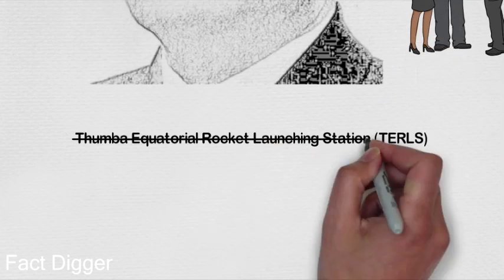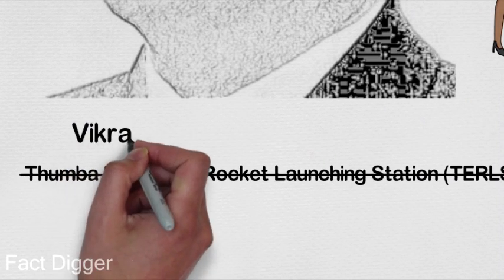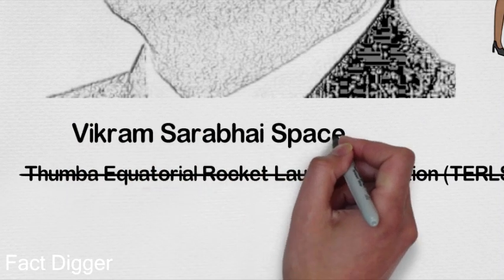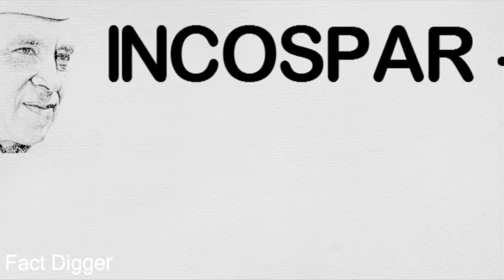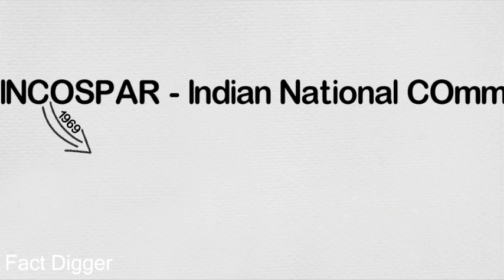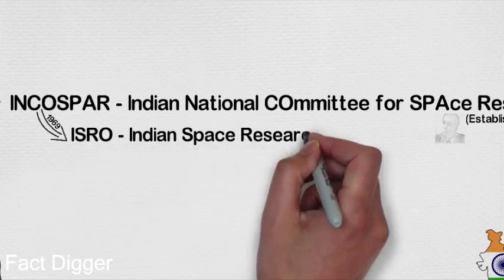Later, the rocket launching station was renamed the Vikram Sarabhai Space Center in honor of Dr. Vikram Sarabhai. INCOSPAR eventually grew into ISRO in 1969, and thus finally institutionalized space activities in India.